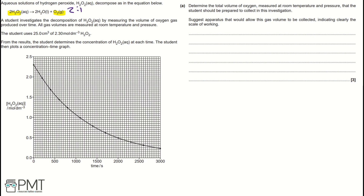Secondly, all gas volumes are measured at room temperature and pressure, so we'll use the equation: volume divided by molar volume (in cm³, this is 24,000) equals the number of moles. The next key piece of information is the volume and concentration of hydrogen peroxide: 25 cm³ and 2.30 mol dm⁻³. Therefore, we'll use the equation triangle where moles equals volume times concentration.